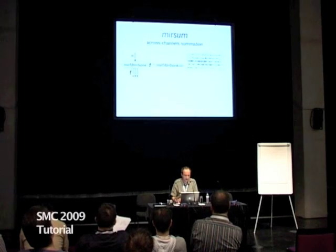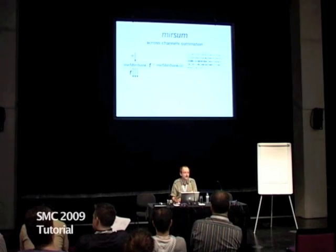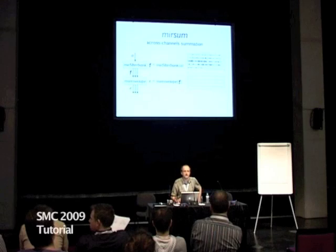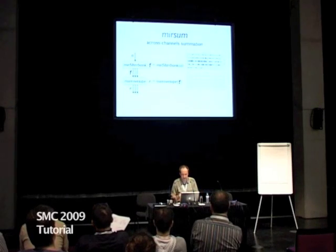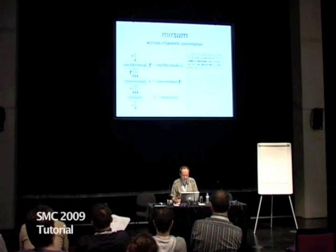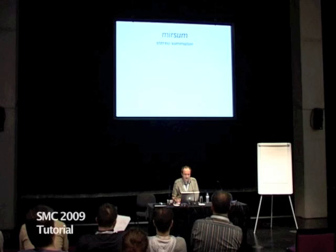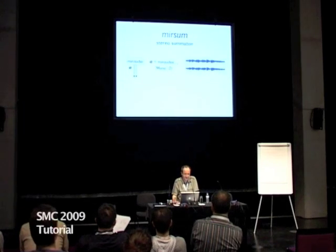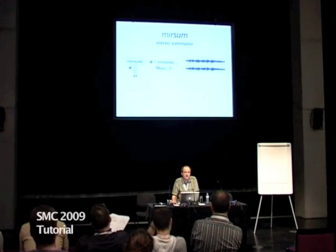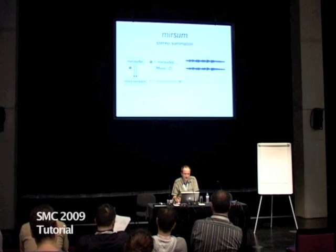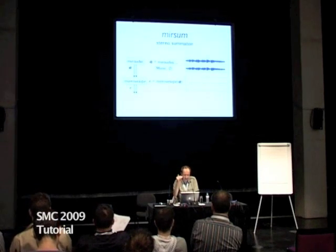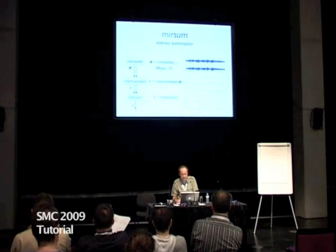Once we add this filter bank decomposition, we can perform any analysis such as envelope extraction. When you say envelope of this, you will get the envelope for each different channel, and then you can sum back. Regarding stereo and mono decomposition: if you use the mono option initially and you want to keep the two channels instead of converting to mono, then you will keep both channels. If you compute the envelope, you will have the envelope for each channel and can sum back.